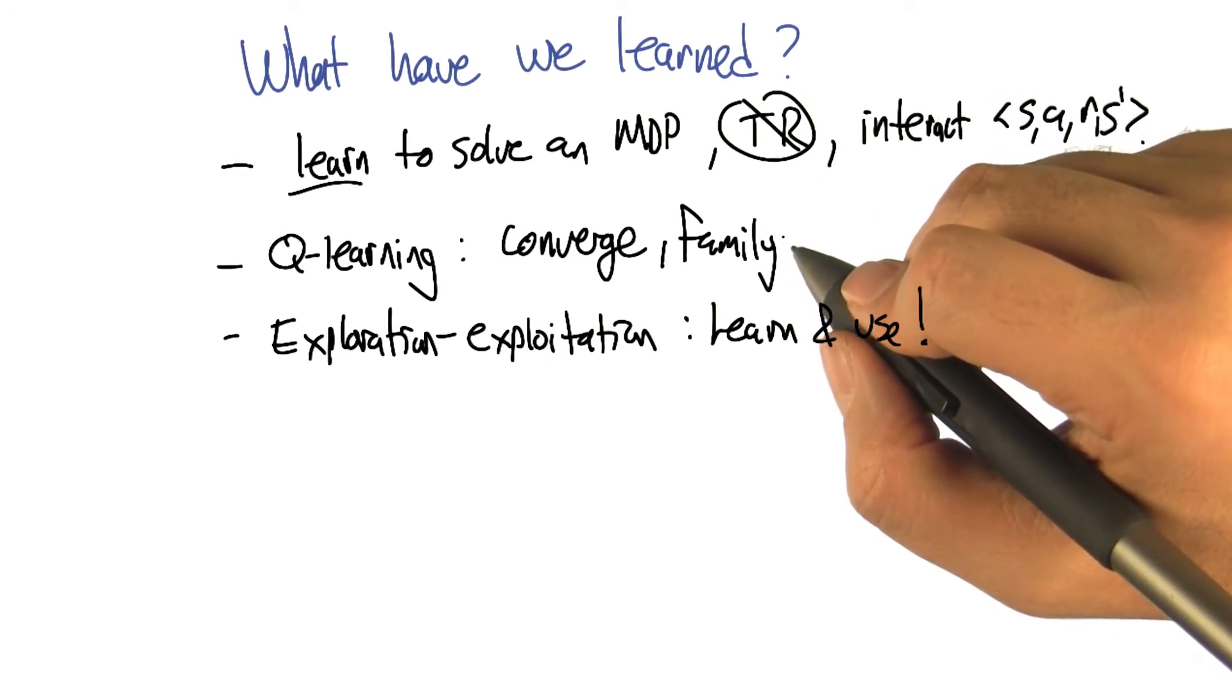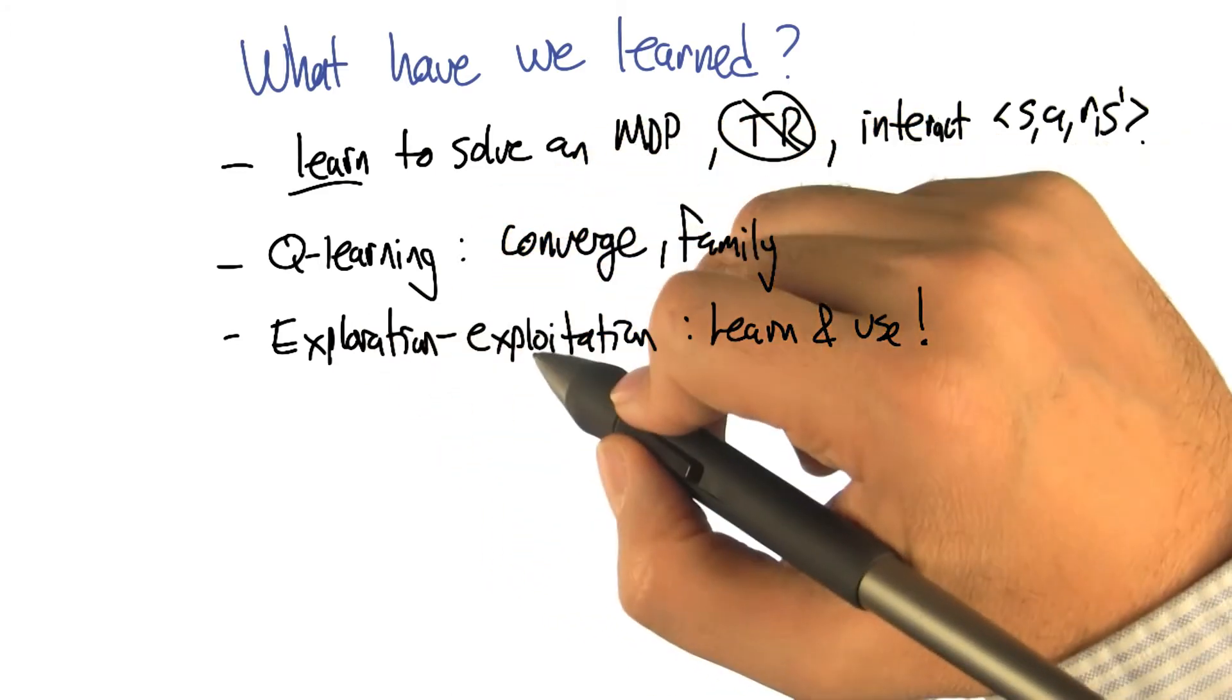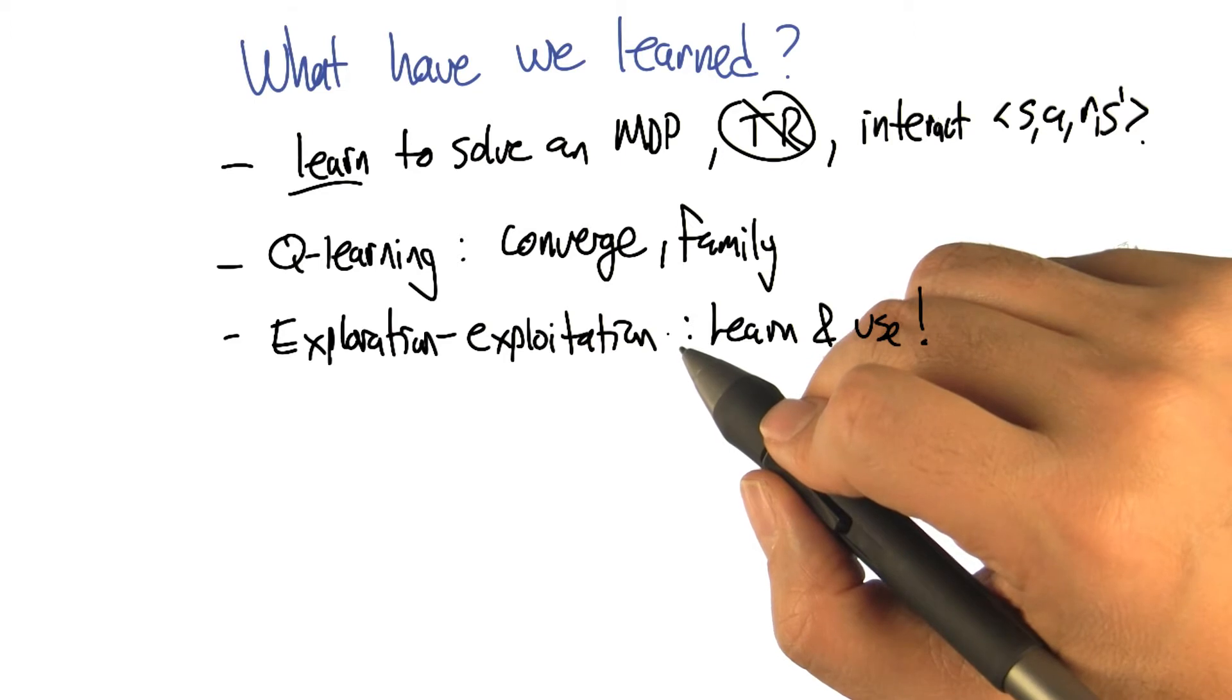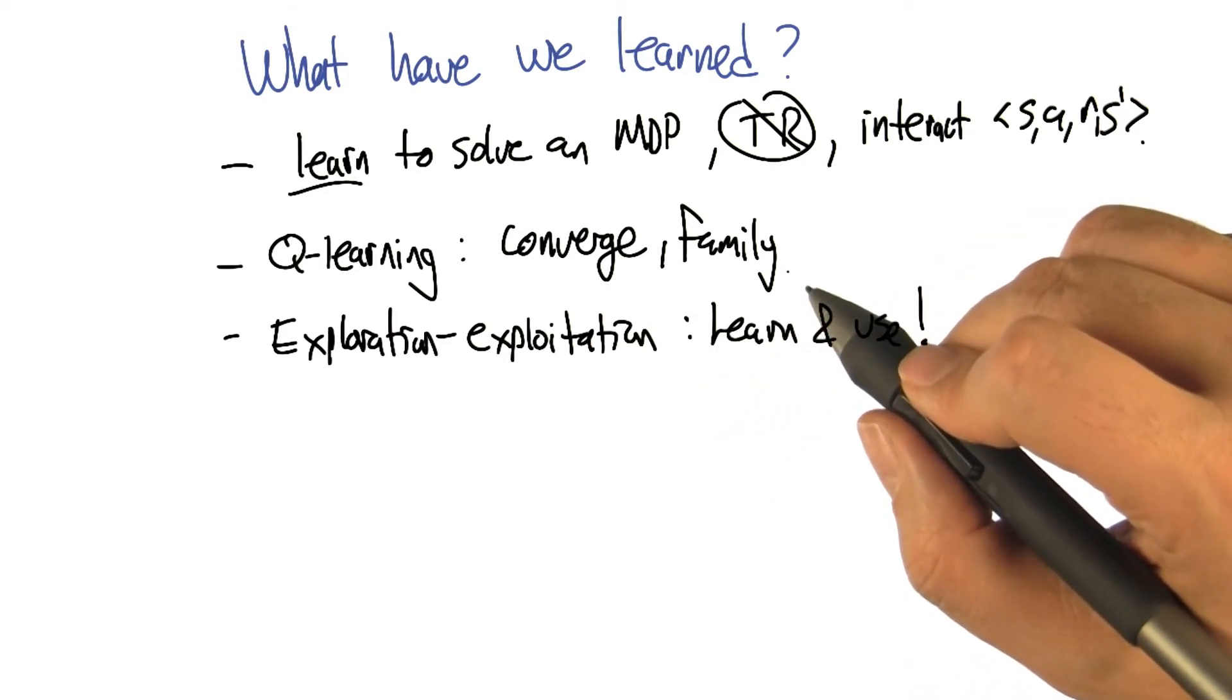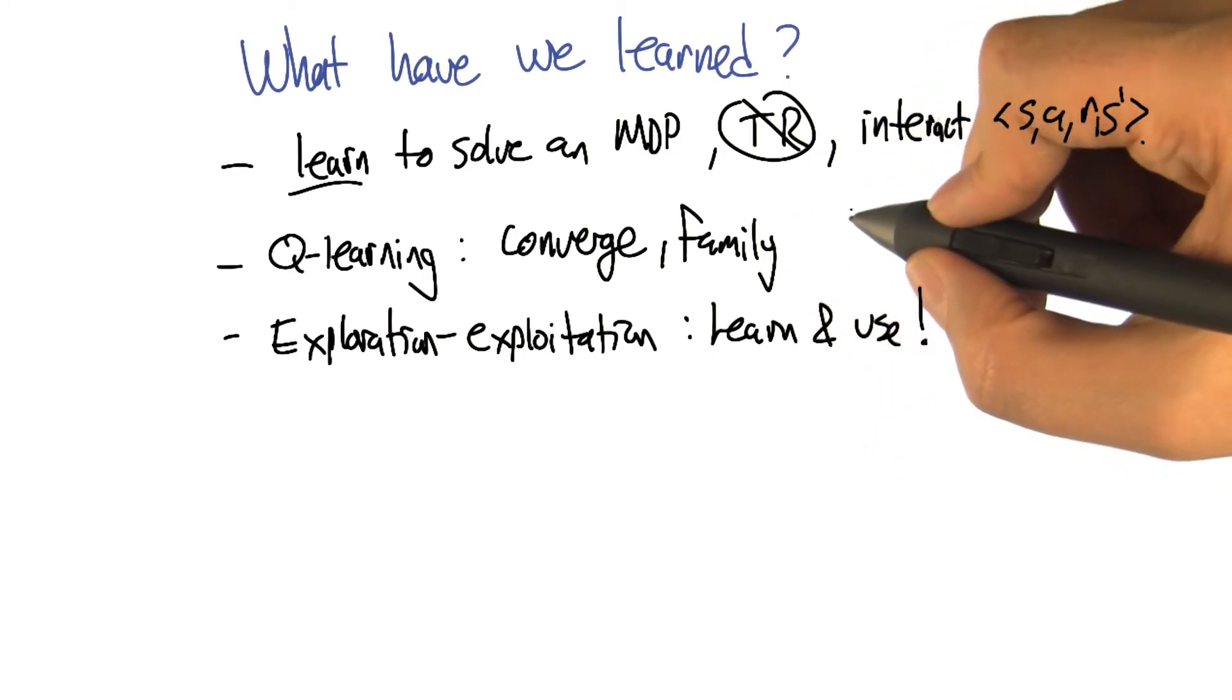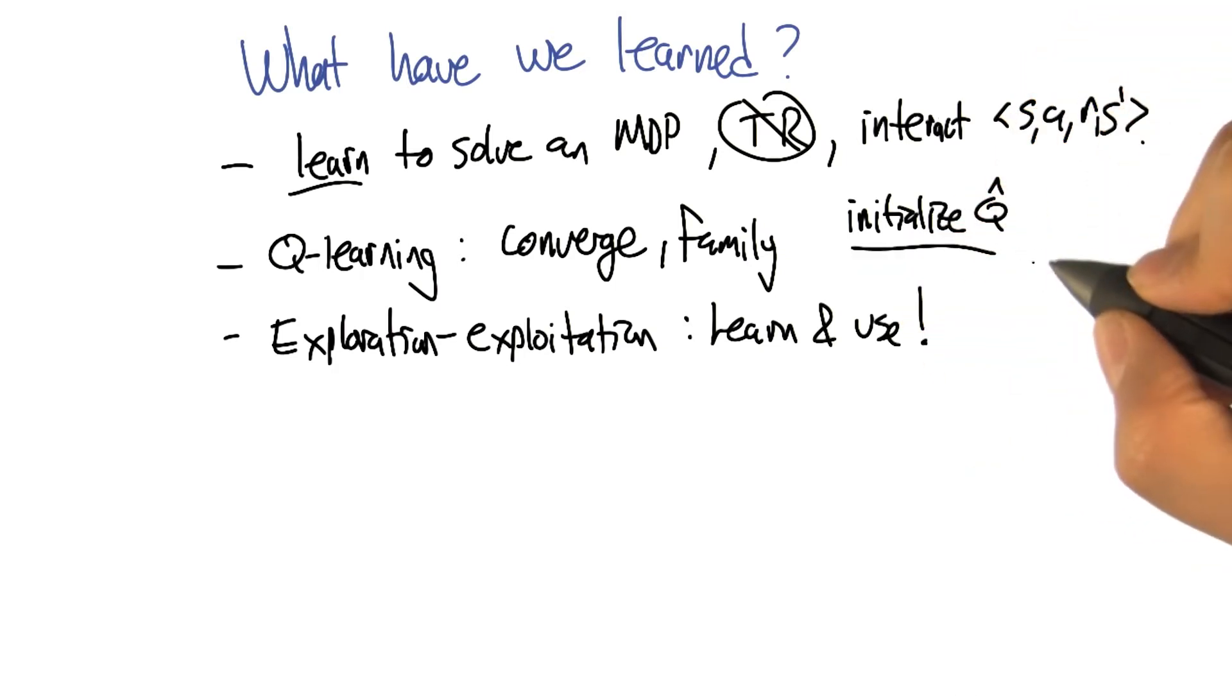There's one other thing I wanted to say on that topic actually. One way to achieve this exploration exploitation balance was to randomly choose actions, to change the way we're doing action selection. But there's another one too, which is that by manipulating the initialization of the Q function, we can actually get another kind of exploration. Can you see how that might work? If you set the Q values to all be the highest possible value they could be.